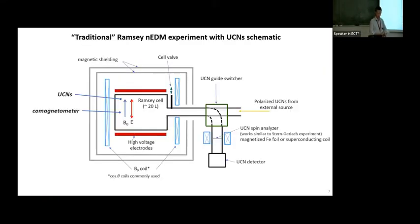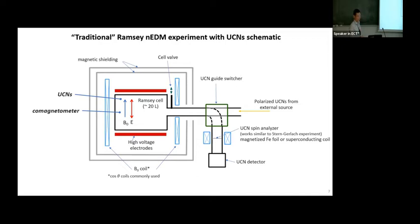The traditional neutron EDM experiment with the Ramsey technique uses what's called a Ramsey cell. You put in your B field — drawn vertically here — and your electric field parallel or anti-parallel to the B field. You bring in external ultracold neutrons, put them into the cell, do your π/2 pulses, and then typically empty the cell by opening a valve. You switch them through a spin analyzer — essentially a Stern-Gerlach experiment separating two spin states in space — then count the pure spin state. You normally have a lot of magnetic shielding to control your magnetic fields.